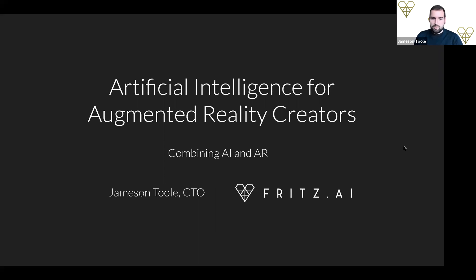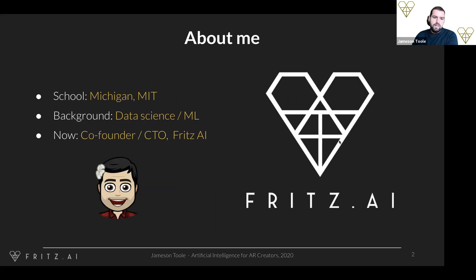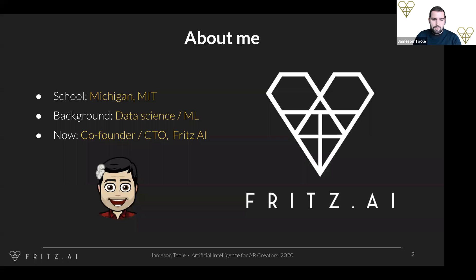Thank you to Poplar for having us. I'm Jameson and I am the CTO of Fritz AI. A little bit about my background — I'm a reformed physicist, I went to the University of Michigan and then did my PhD in machine learning at MIT. That's really where my background lies, in the data science and machine learning side of things. I'm co-founder and CTO of Fritz AI, a Boston-based company that enables developers and AR creators to build AI models and put them into mobile apps.